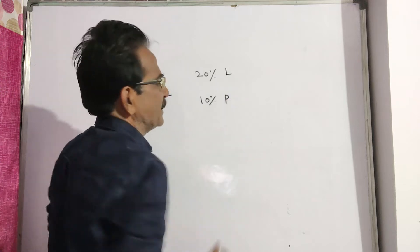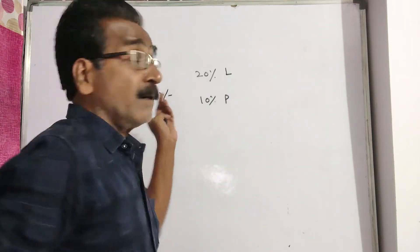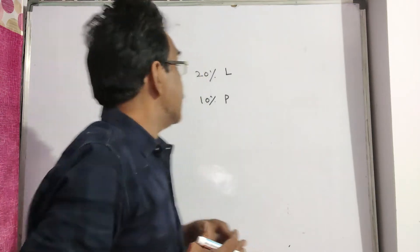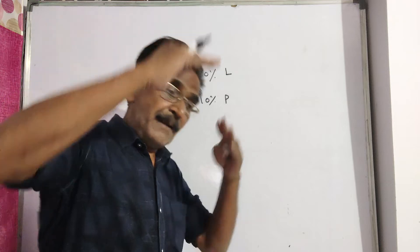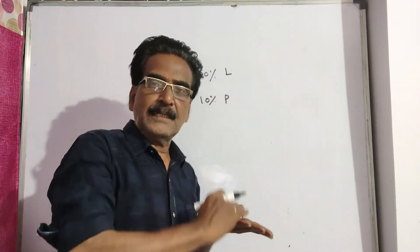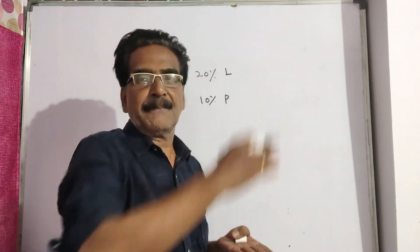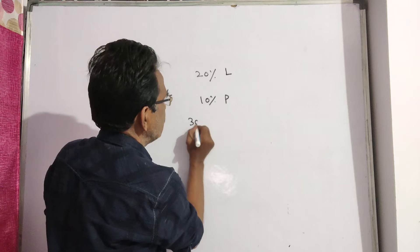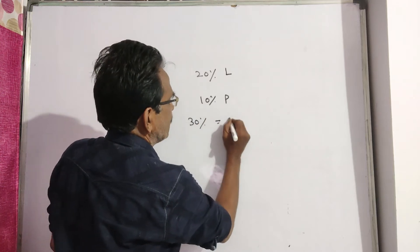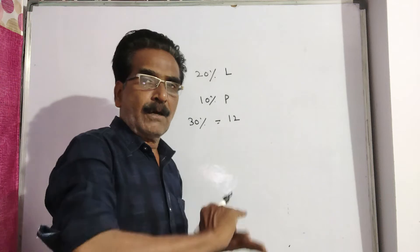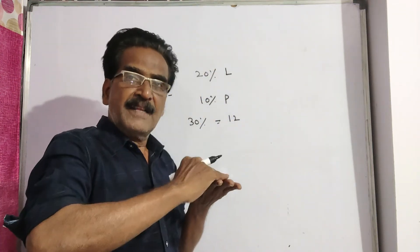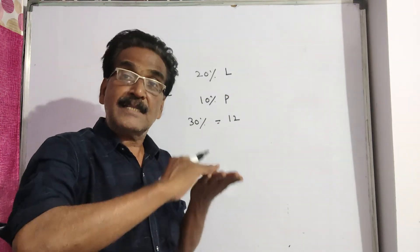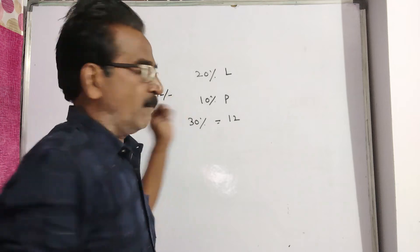Because of this 12 rupees increase, he is getting 10% profit from 20% loss. Going from 20% loss to 10% profit means he gained 30% overall. The 20% loss is covered and moreover 10% profit is gained — the overall gain is 30% because of this 12 rupees.